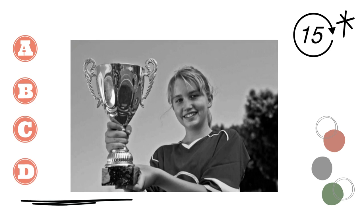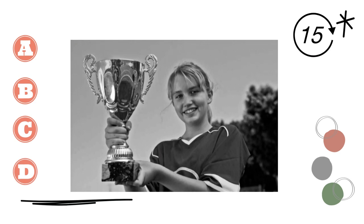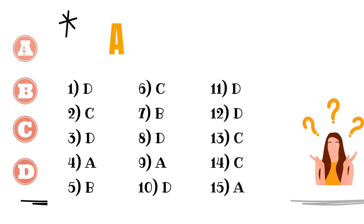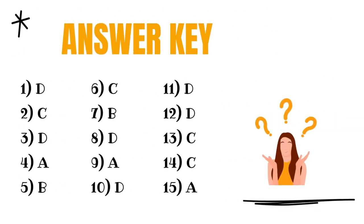15. A. The girl is holding a trophy. B. The girl is holding a certificate. C. The girl is wearing a medal. D. The girl is giving a prize.